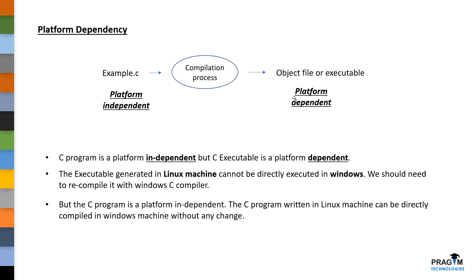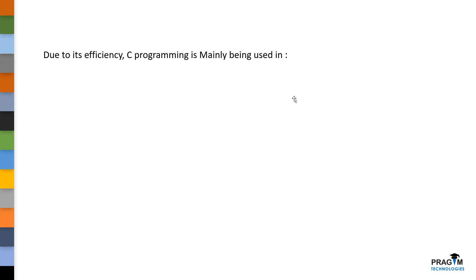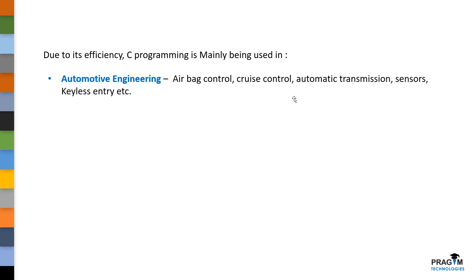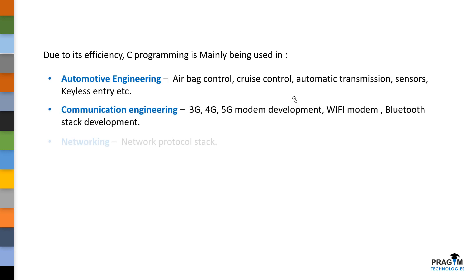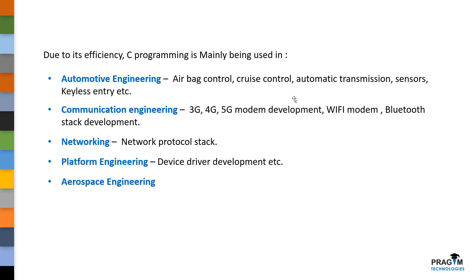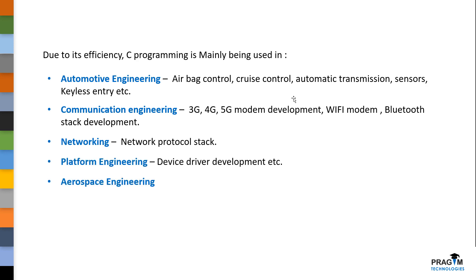Due to its flexibility and fast execution, C programming is now mainly being used in many industries such as automotive engineering, communication engineering, networking, platform engineering, and aerospace engineering. The most popular operating systems like Windows, Mac, and Linux were completely written in C programming language.